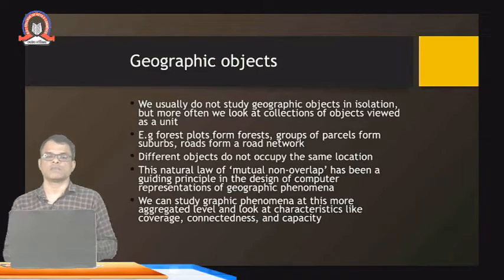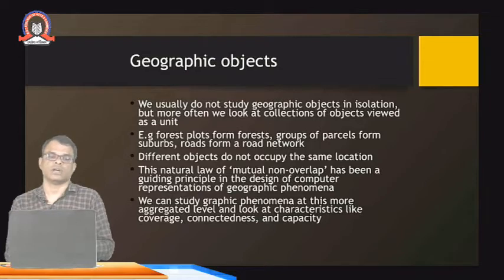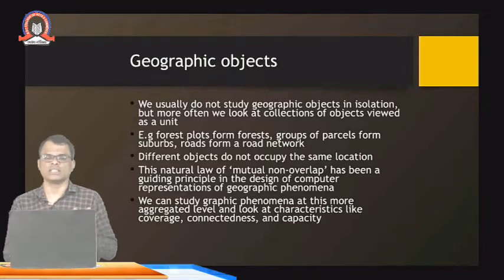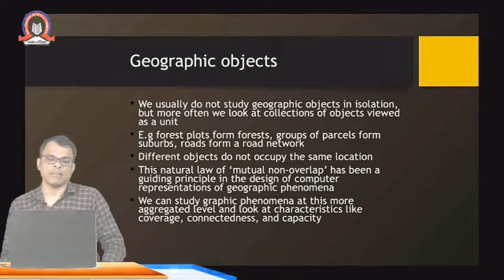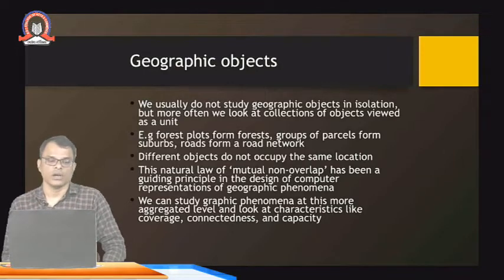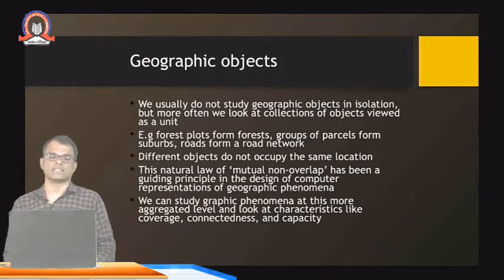If it is a forest plot, then different trees are considered together. If you are considering suburbs, then different localities are considered together. If you are considering roads, hotels and industries are all considered while representing the road. Different objects do not occupy the same location — this natural law of mutual non-overlap has been a guiding principle in designing computer representations of geographic phenomena.